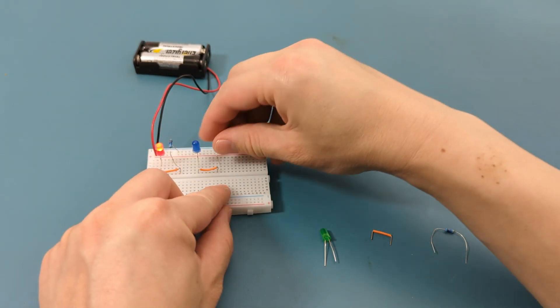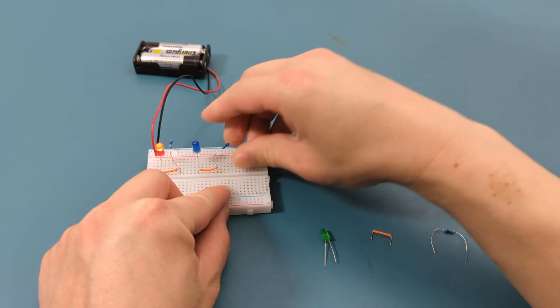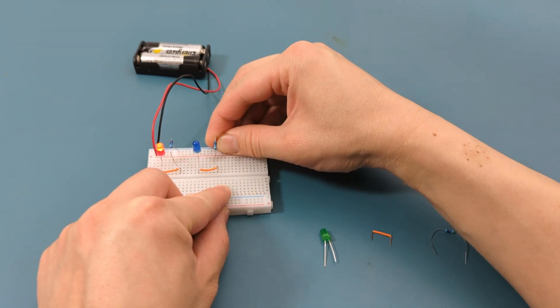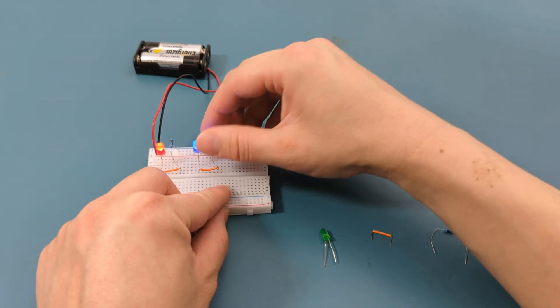Once you've successfully connected the circuit a few times, you can have the breadboard placed horizontally. As you can see, the jumper wires bend very easily so you want to insert them carefully. The blue LED lights up.